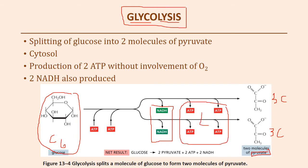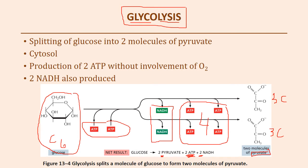As you split glucose, you generate NADH — high-energy electron carriers — because the electrons holding the carbons together carry usable energy. Those electrons are attached to NAD+ to produce NADH. You also generate some ATP molecules. You produce four ATPs total but use two to keep the process running, so the net result is two ATP molecules. At the end of glycolysis: two pyruvates, two NADH, and two net ATPs. Glycolysis takes place in the cytosol of the cytoplasm.